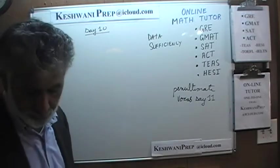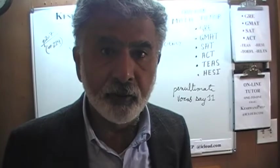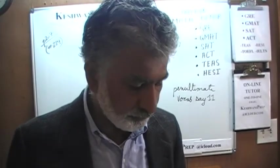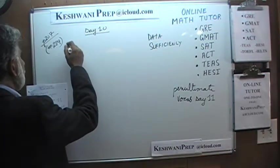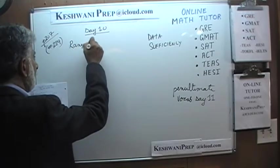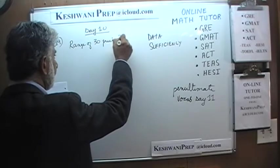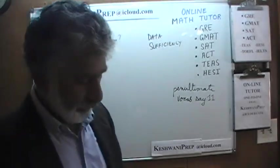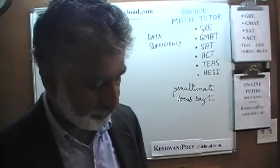Number 289. It is important that you have the book in front of you so that you can follow the problem properly, because I am not going to write down the entire problem — just bits and pieces. Here we have to find the range of 30 prices.